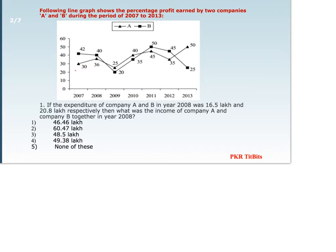The first question: the expenditure of company A and B in the year 2008 was 16.5 lakhs and 20.8 lakhs respectively. They have given the expenditure of company A and B, and we have to find the total income of both companies together.